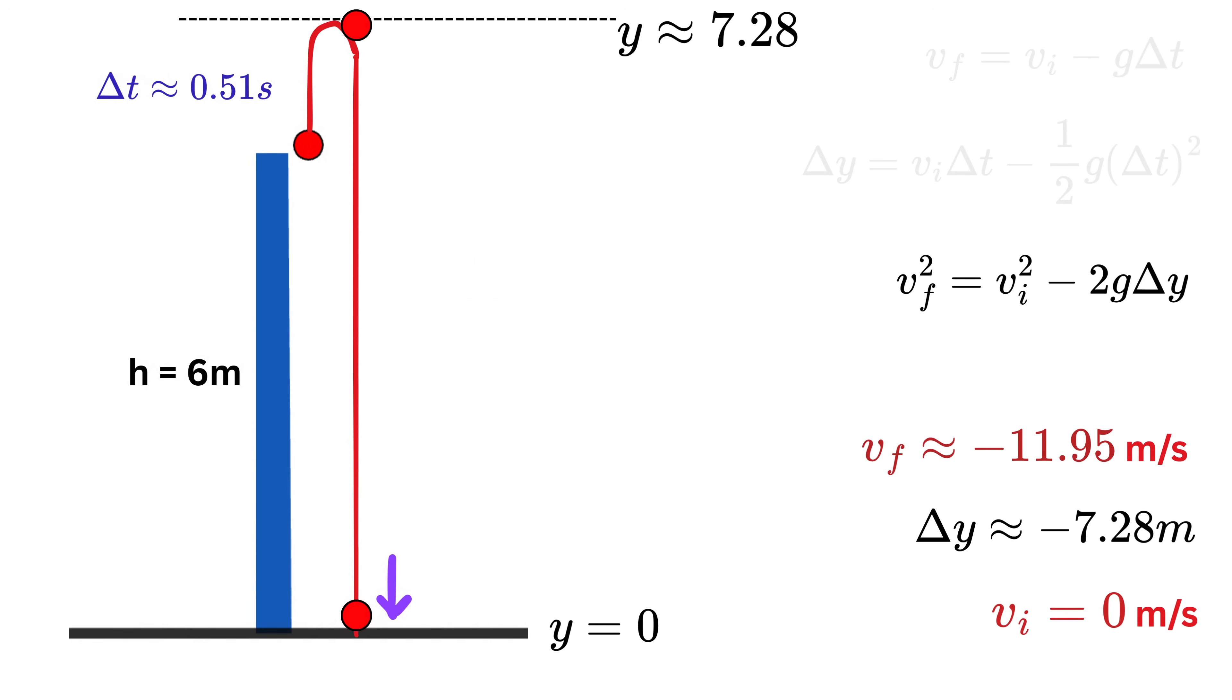Finally, we need to find the total flight time. For that, we have to add the time taken to reach the peak height and the time taken to come down from that maximum height to the ground. To calculate the time for the downward journey, we can choose the first kinematic relation. We already have all the values except for the time Δt, so we get minus 11.95 equals 0 minus 9.8 times Δt. This gives Δt as nearly 1.22 seconds. So, the downward journey takes about 1.22 seconds, and when we add the upward time of 0.51 second, the total flight time becomes about 1.73 seconds, and that's it.